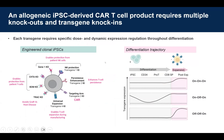To generate these allogeneic CAR-T products, we need to conduct multiple genetic manipulations. Here on the left you see an example of Notch's prototype cell products that requires four knockouts and knock-in of four different transgenes. All these different transgenes have very specific function at the end stage of our product.